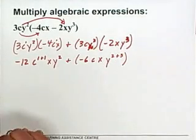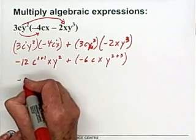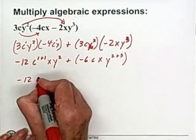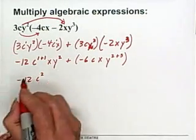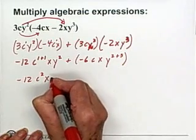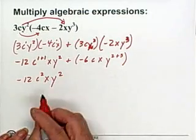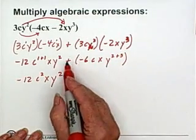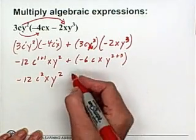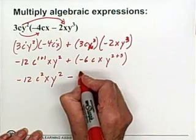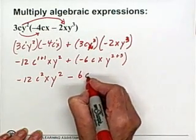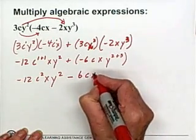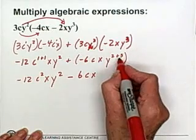Now let's go through this again. Here we have -12. C to the 1 plus 1 is c². And we have xy². The plus in front of a negative, what happens is we can just remove the bracket and end up with a minus. So we end up with a -6. c, x. And here we have y to the 5.